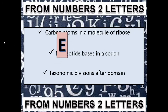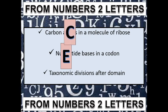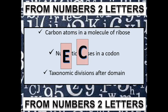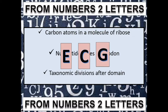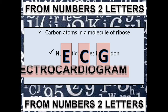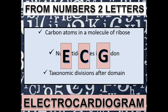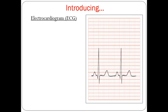Carbon atoms in ribose: five — so that's E. Nucleotide bases in a codon: three — so that's C. Taxonomic divisions after domain: Kingdom, Phylum, Class, Order, Family, Genus, Species — that's seven — so G. ECG: electrocardiograms. Let me show you the diagram of an electrocardiogram.